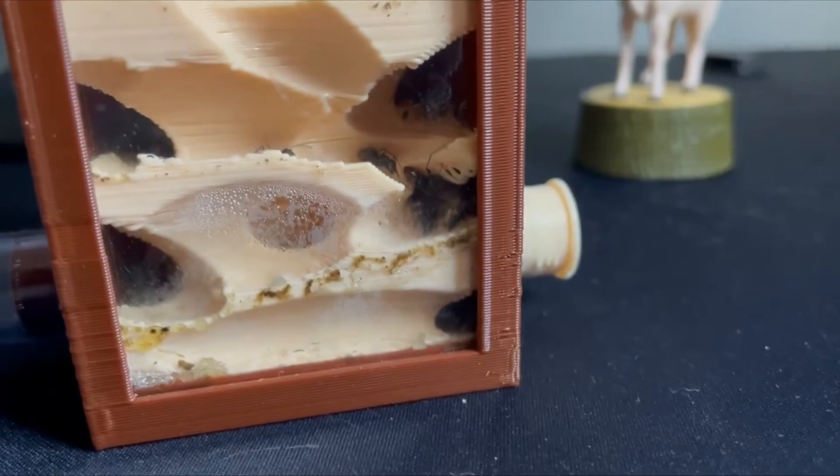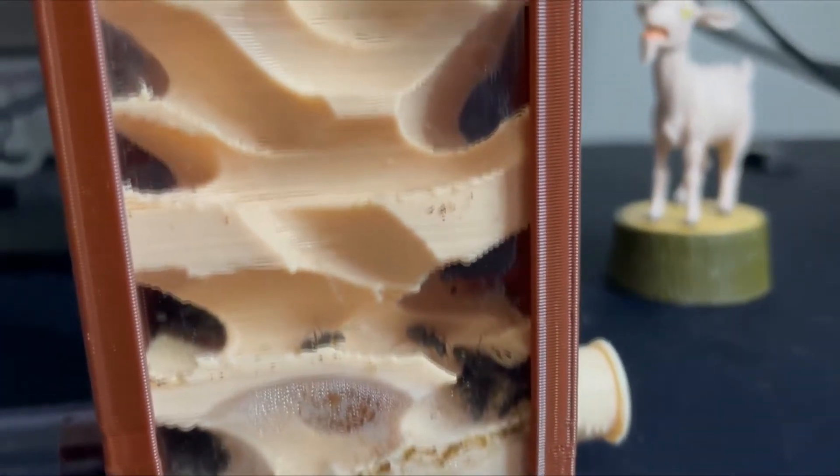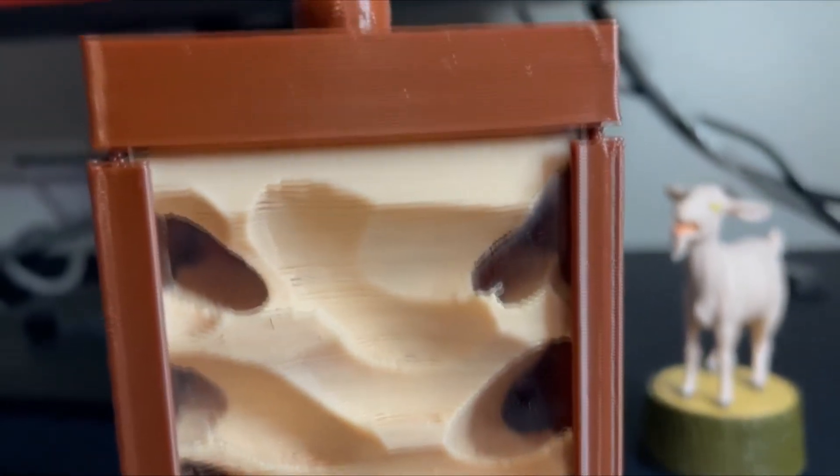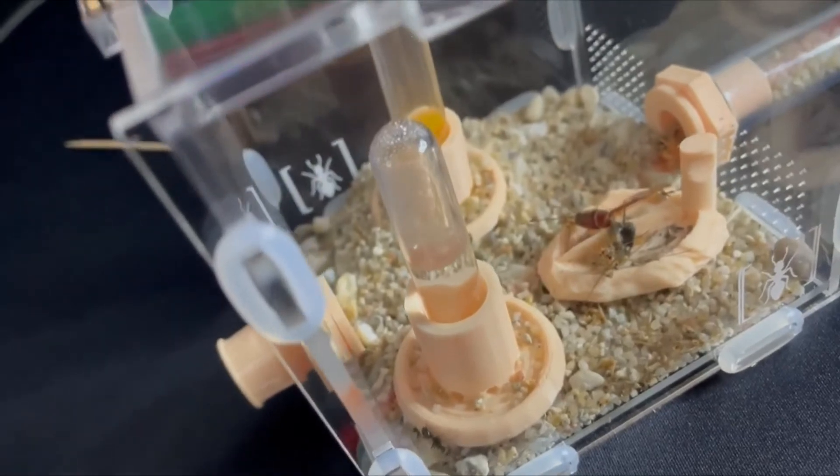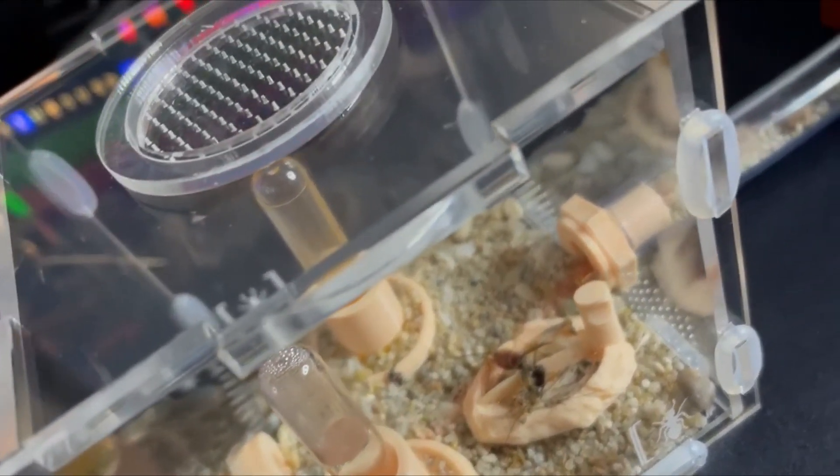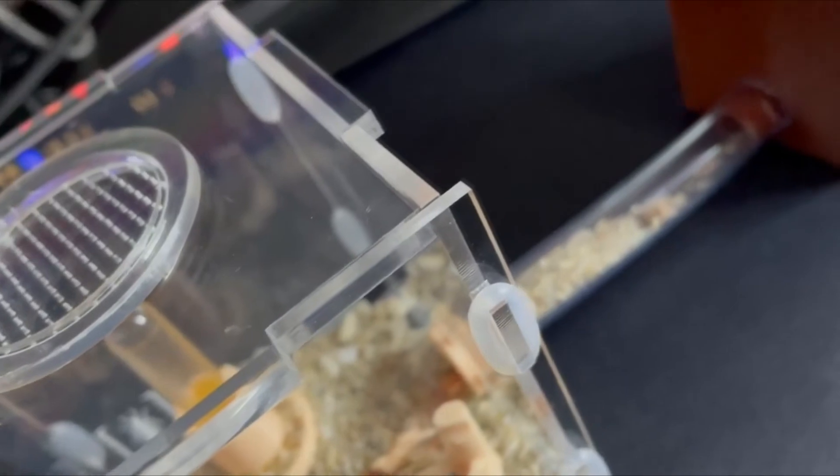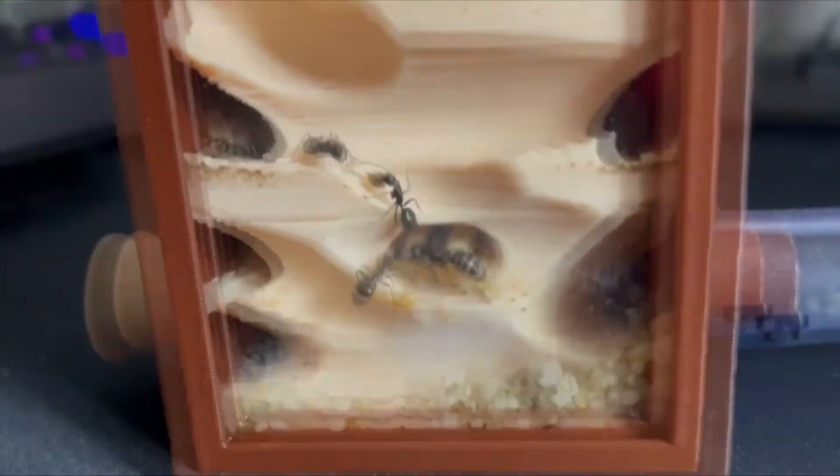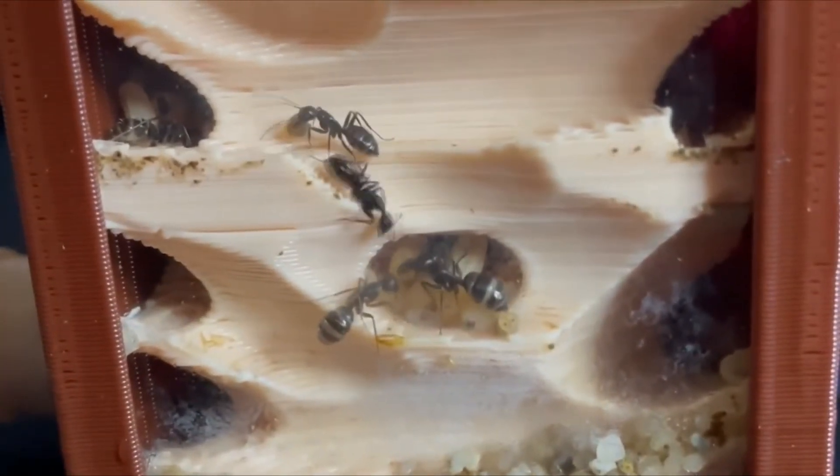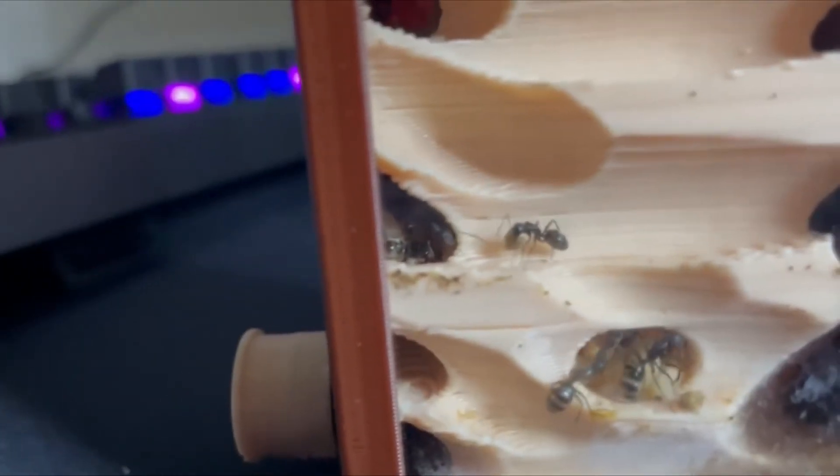Overall, this nest is seriously the perfect nest to move a new colony into. With how easy it is to assemble, clean, and maintain, you really can't go wrong with this nest. If you pair it with a medium-sized outworld from Ant Shack, as you see in this video, you have the perfect setup for your colony to grow big and healthy. If I had to rate this nest, I would give it an 8 out of 10. The reason I give it an 8 out of 10 is simply because it only comes with one color—a brown frame with a tan nest—and the plastic can melt if you're using a heating cable and you put the heating cable too close to the nest.